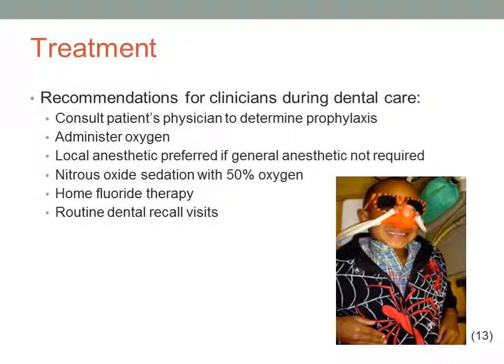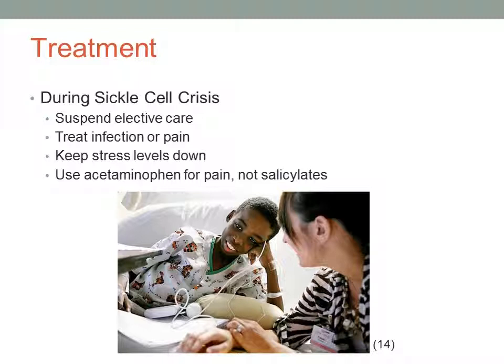Sickle cell anemia is a hereditary disease and cannot be cured. Yet there are preferred options to help manage the effects of this disease when providing dental care. Before treatment, consult the patient's physician for a prophylaxis regimen. During care, low oxygenation of the blood is the major concern; therefore, local anesthetic is preferred compared to general anesthetic. Administration of oxygen with or without nitrous oxide can also be used. In general, the best treatment is no treatment, so preventative care like in-home fluoride therapy and routine dental recall visits is highly recommended. During a sickle cell crisis, all treatment should be suspended unless it is for emergency care to reduce infection or pain. General stress-reducing protocol can reduce incidence of complications, and use acetaminophen for pain, as salicylates may induce acidosis.